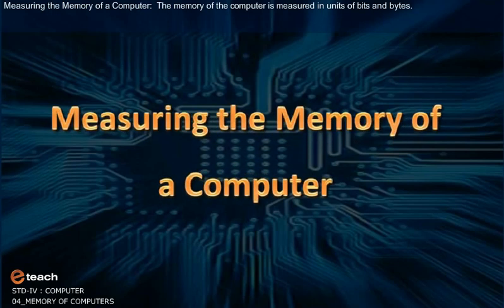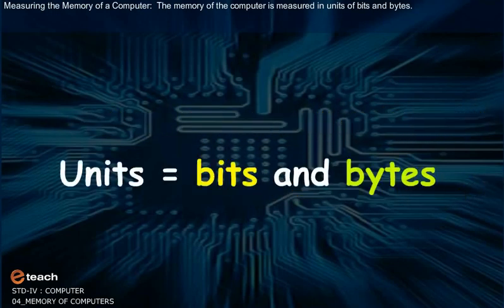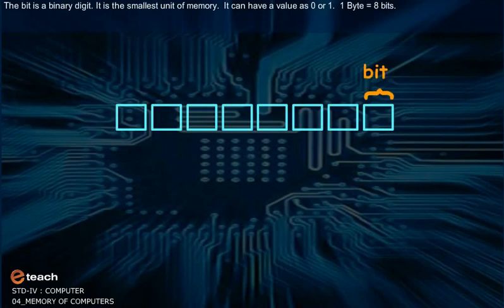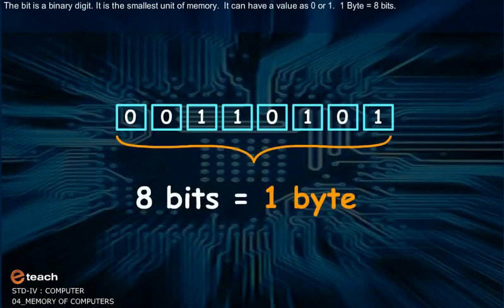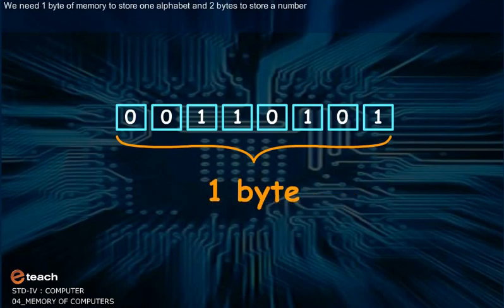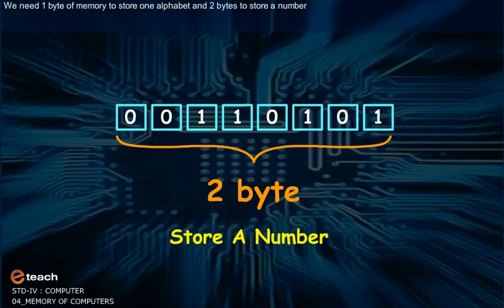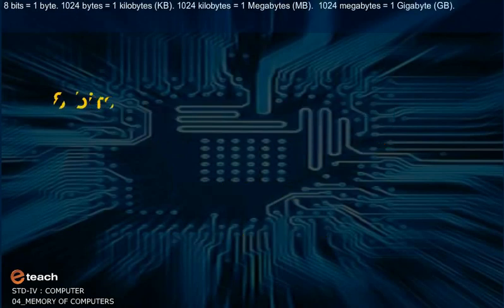Measuring the Memory of a Computer: The memory of the computer is measured in units of bits and bytes. The bit is a binary digit — it is the smallest unit of memory. It can have a value of 0 or 1. 1 byte is equal to 8 bits. We need 1 byte of memory to store 1 alphabet and 2 bytes to store a number.